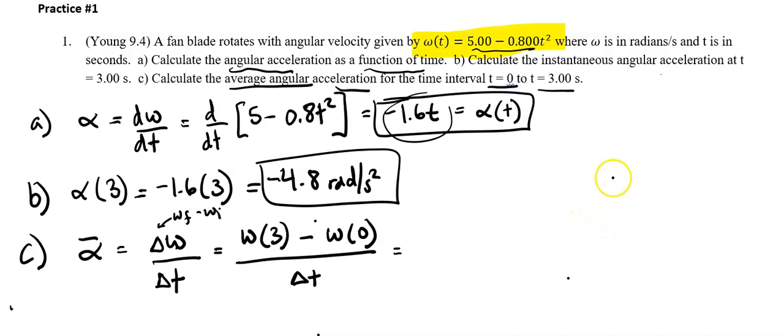Let's go ahead and see what some things are. I'll go ahead and just do a side calculation. So omega(3), that's going to be 5 - 0.8 times 3 squared, and I got -2.2 radians per second.